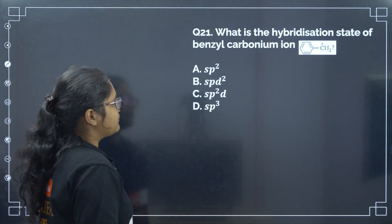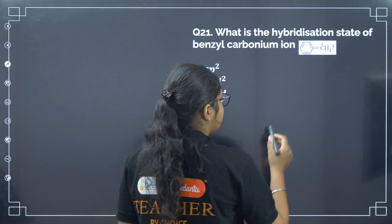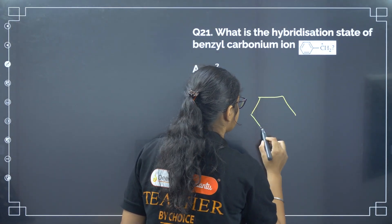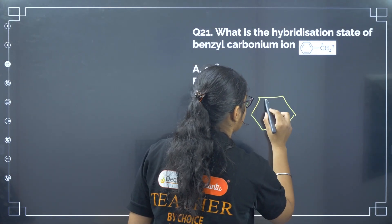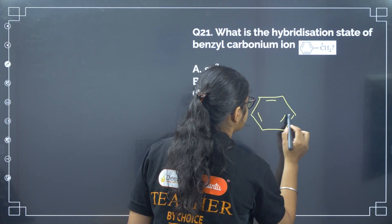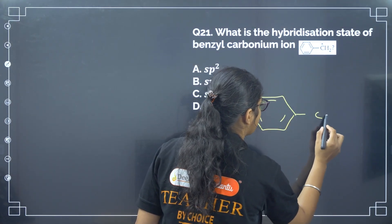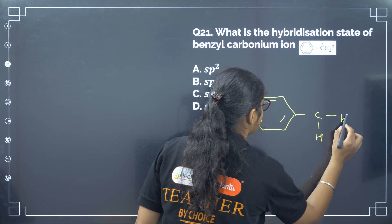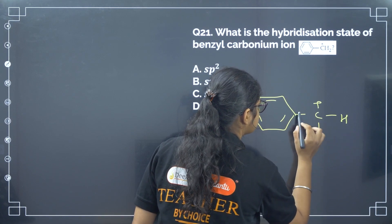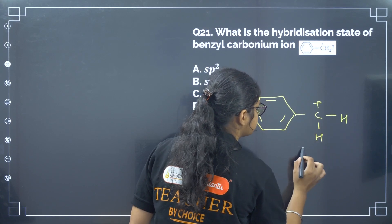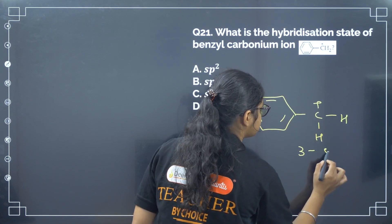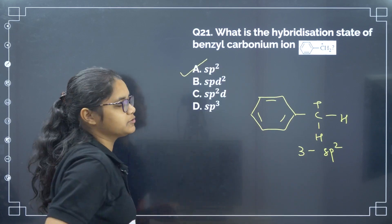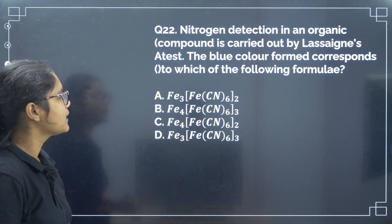Next: what is the hybridization state of benzyl carbocation? Hybridization is determined by the number of sigma bonds and lone pairs. The benzyl carbocation carbon has 3 sigma bonds, so hybridization is SP2. Correct answer is option number A.